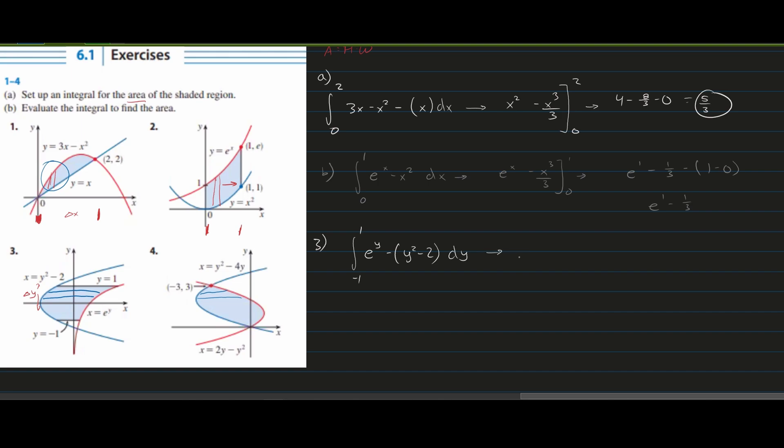Writing this out, taking the integral of e to the y is just e to the y minus we're going to have y cubed over 3 and then minus 2y. We're going to bracket this off with 1 and negative 1. Now we just plug this in. We're going to have e to the first power minus 1 over 3 and then minus 2. This is our equation here. Then we subtract the lower limit. We always do the top limit and then the lower one.